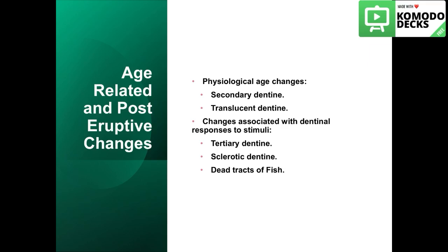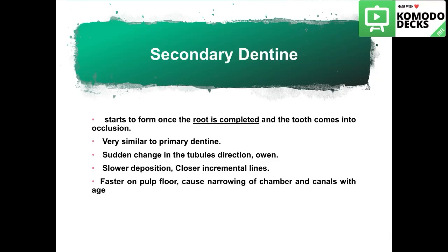What happens to dentine with aging and after the teeth erupt into the oral cavity? There are physiological age changes like secondary dentine and translucent dentine, and there are changes associated with responses to stimuli or pathological changes like tertiary dentine, sclerotic dentine, and dead tracts. Secondary dentine starts to form once the root is completed and the tooth comes into occlusion. It is very similar to primary dentine, but there is a sudden change in the tubules' direction which gives a contour line of Owen. It has a slower deposition rate, closer incremental lines, faster deposition on the pulp floor, and can cause narrowing of the chamber and canals with age.